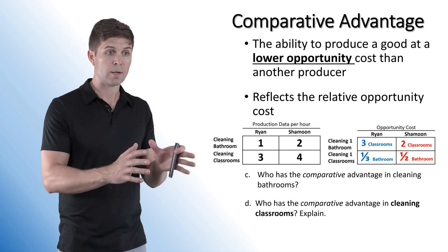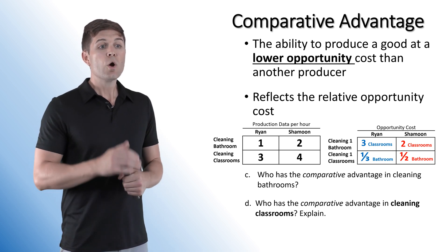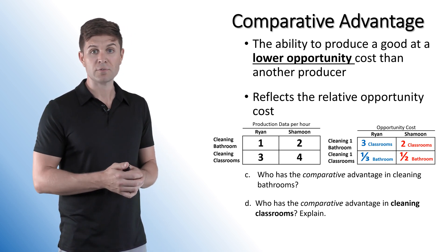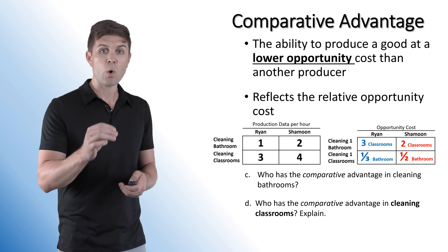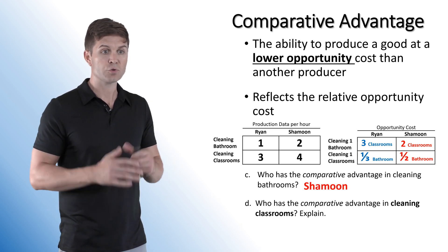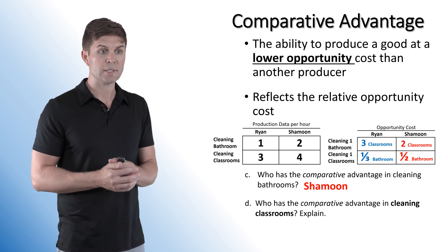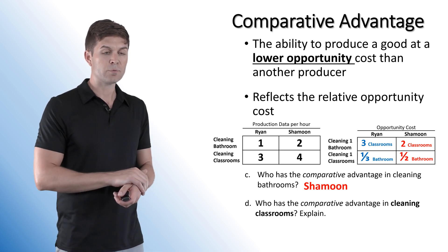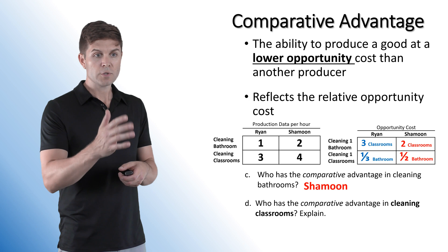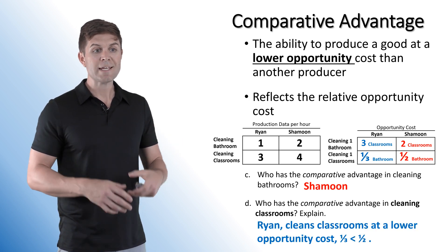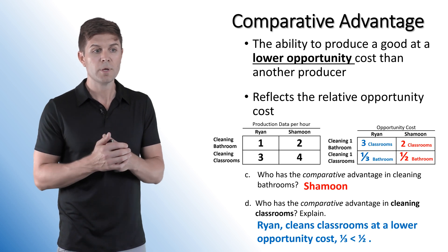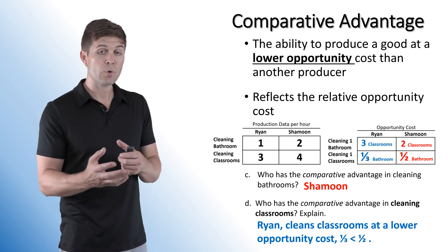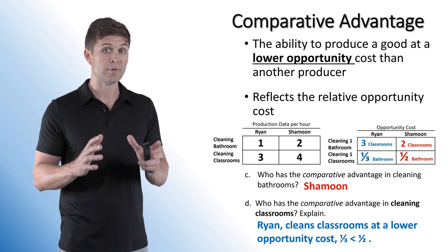Remember — sacrifice divided by what you produce for output problems. Who has the comparative advantage in cleaning bathrooms? Shamoon sacrifices two classrooms while Ryan sacrifices three. The lower opportunity cost has the comparative advantage, so Shamoon has it in cleaning bathrooms. For classrooms, Ryan's cost is one-third of a bathroom versus Shamoon's one-half. Ryan has the comparative advantage in cleaning classrooms — he sacrifices less, and one-third is less than one-half.